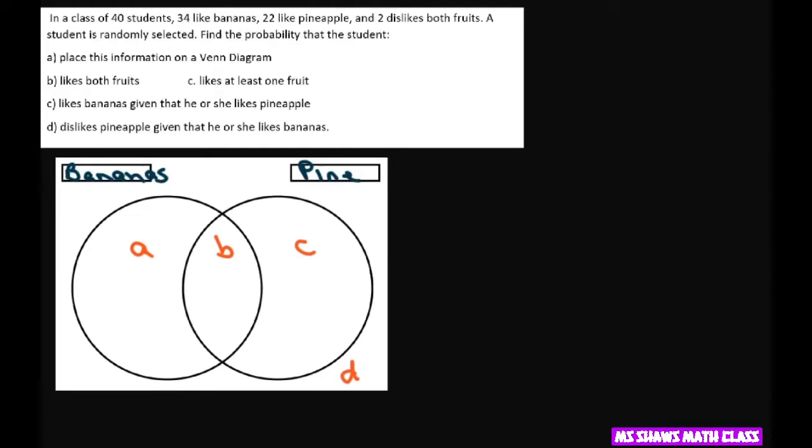So we know that for bananas, which is this circle here, we know that A plus B equals 34. And the pineapples, which is this circle here, is going to be B plus C equals 22. We know D is 2 because that's the dislike. They don't like either one.